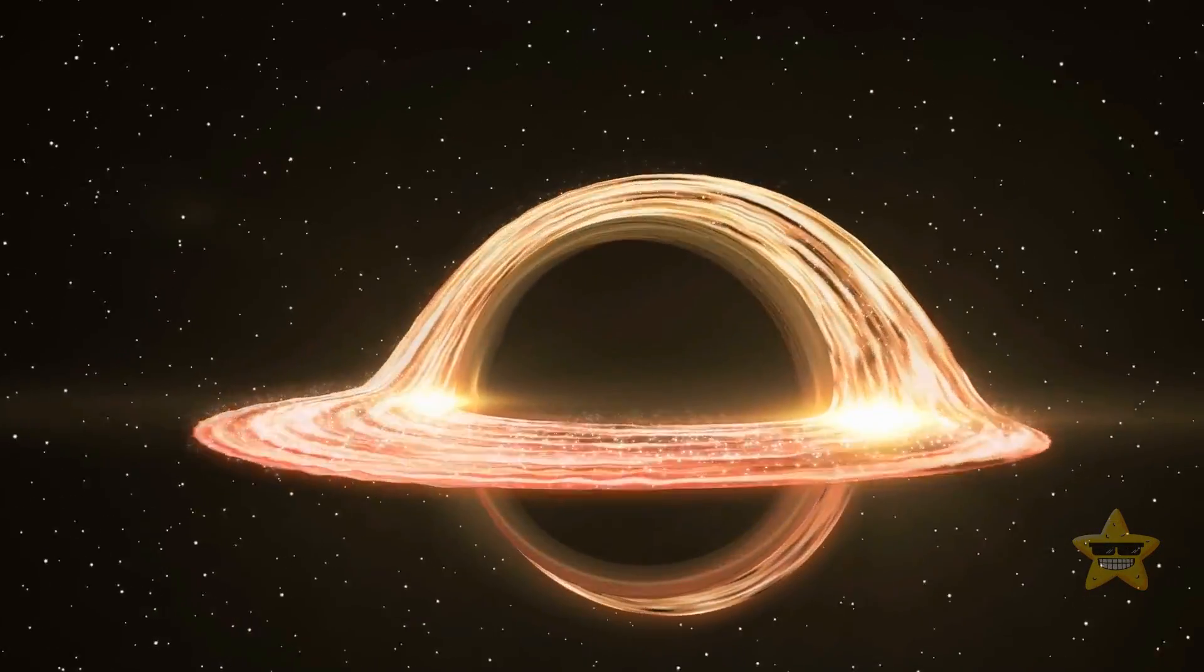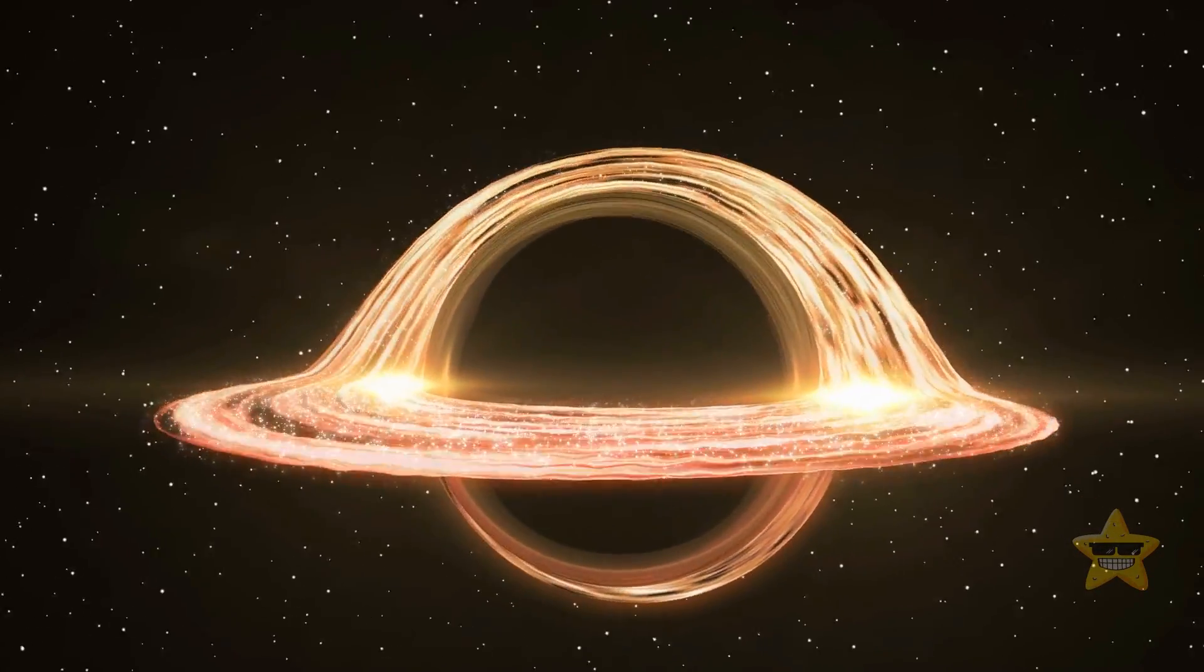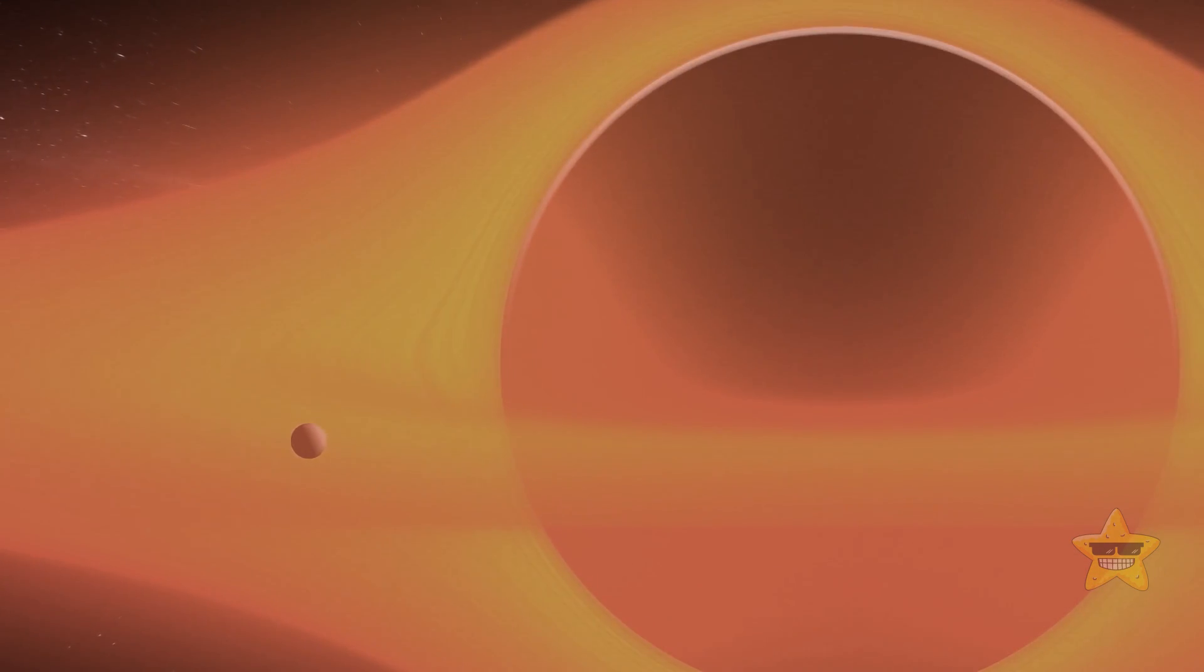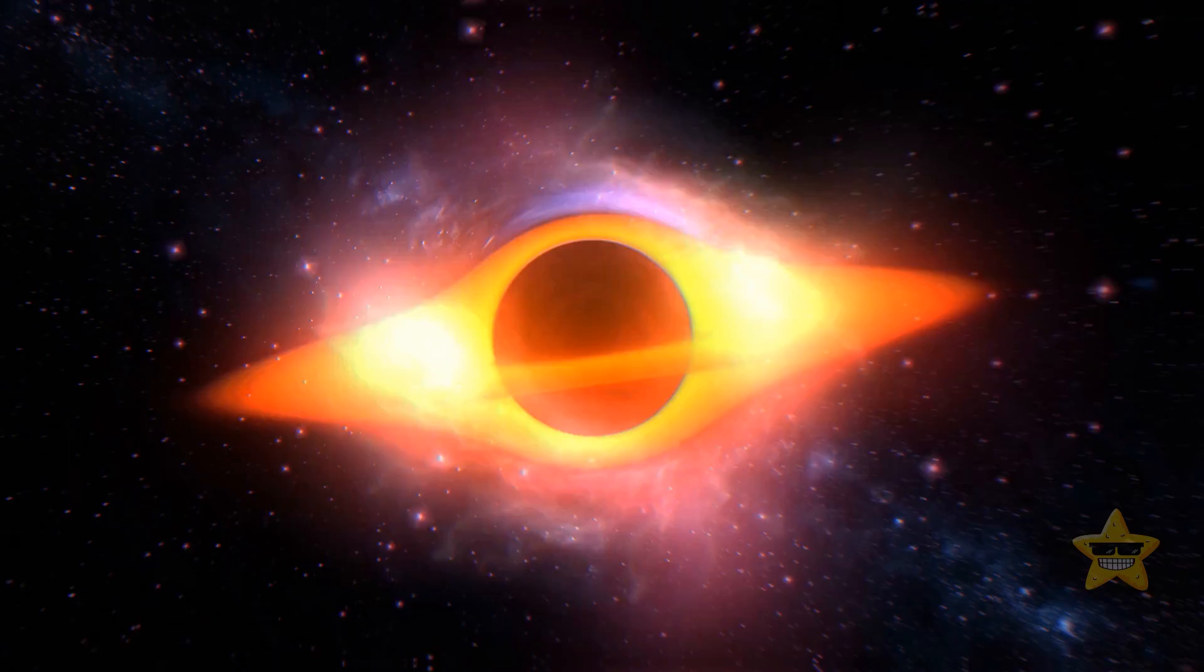Black holes have an accretion disk, which is like a swirling thing that orbits them, like a whirlpool. When stuff from their surrounding falls into this whirlpool, it gets very hot and starts shooting out X-rays.